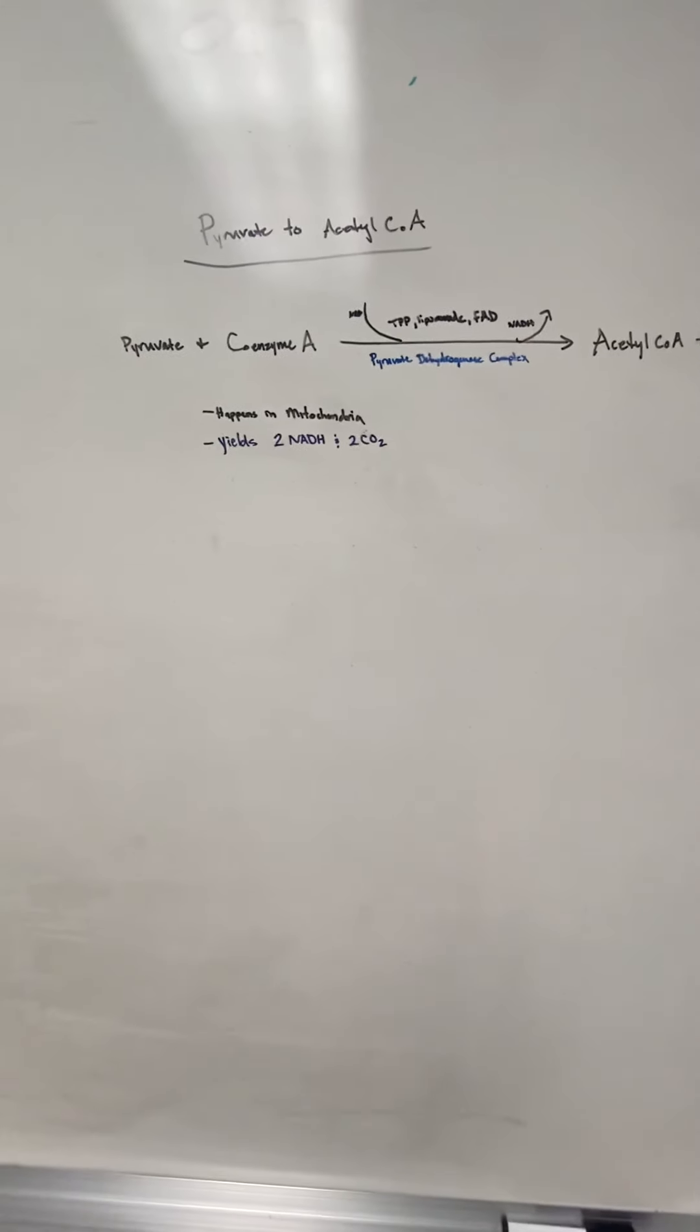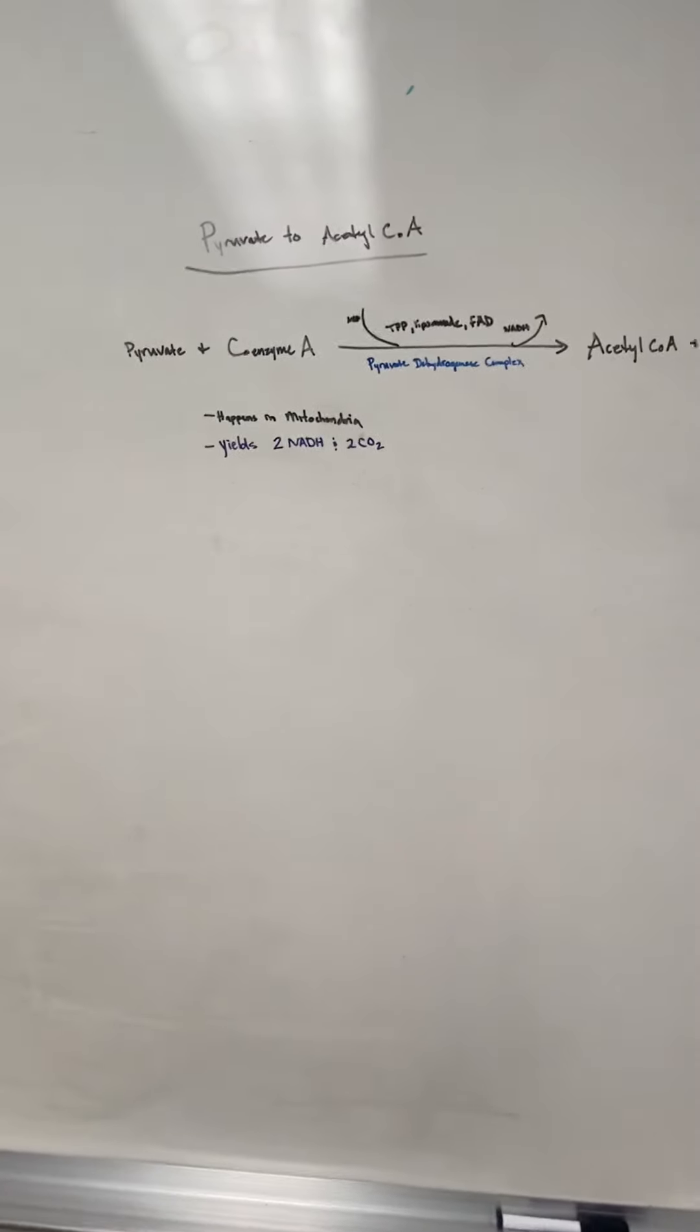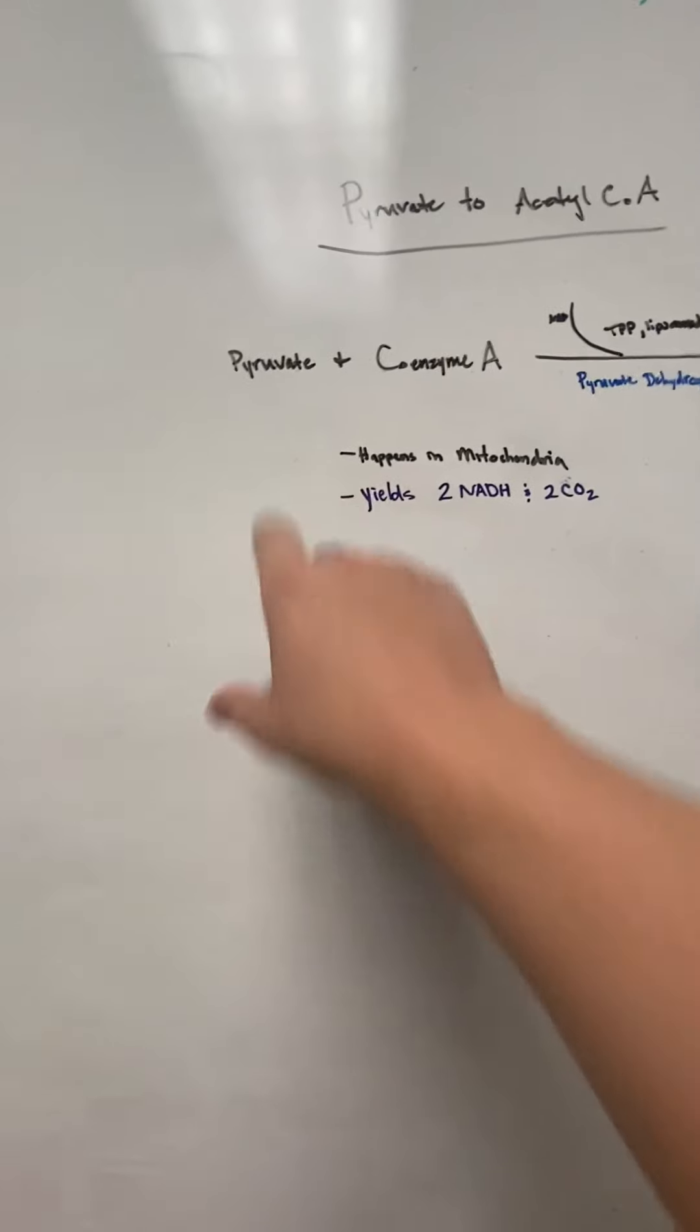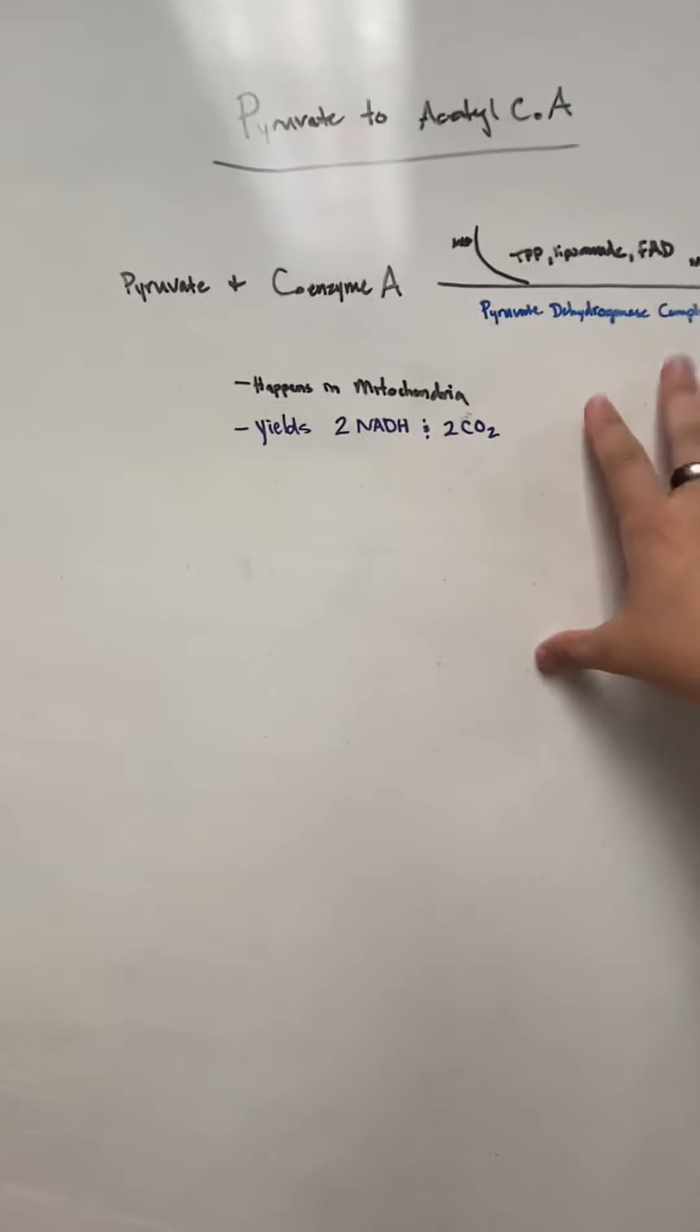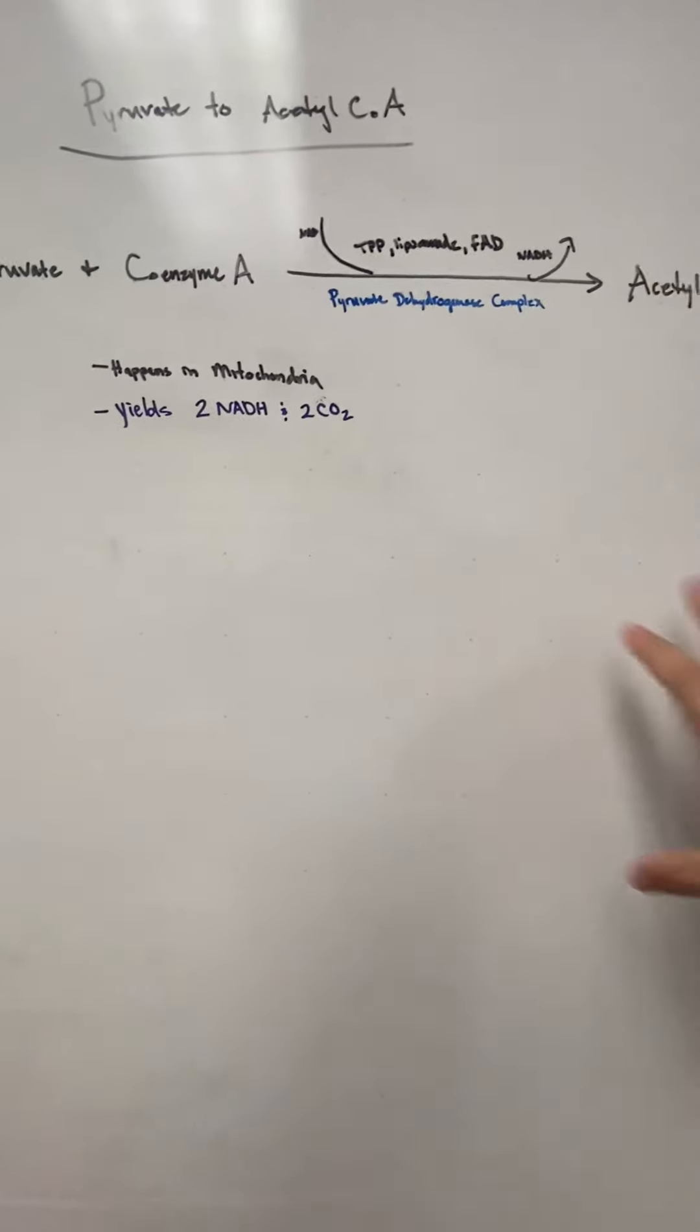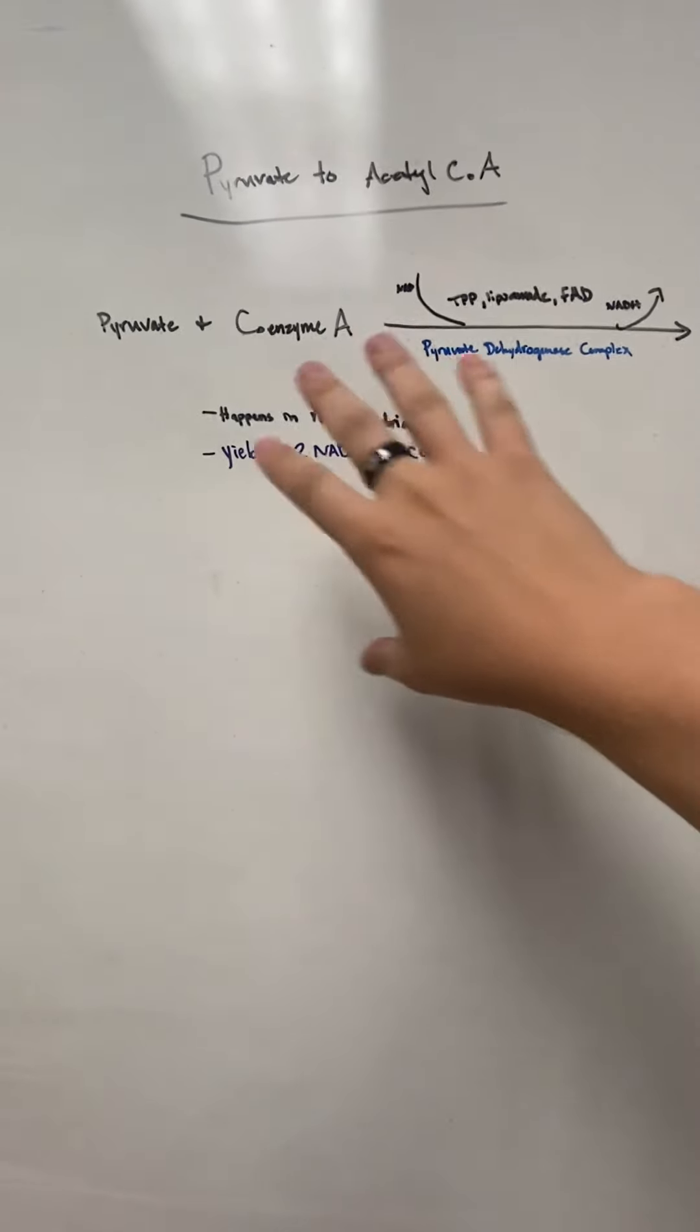Okay, so now that we've finished glycolysis, we're left with pyruvate. There's this little reaction that happens, and then we enter the TCA cycle. We'll go over this real quick.